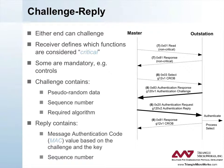The attacker would have to not only determine the appropriate sequence number for the moment of the attack, but also guess the random data to be used. This is exceedingly difficult because the receiver of the original message — in this case the outstation — chooses the random data.